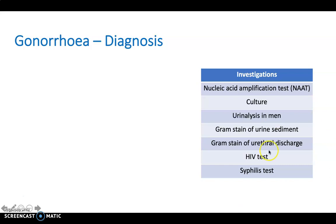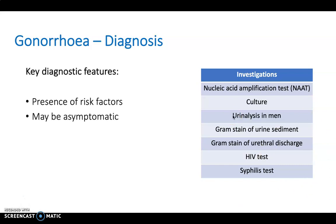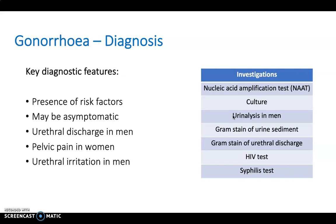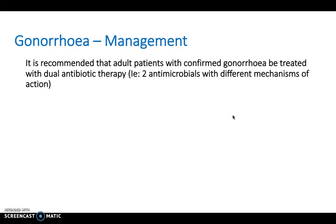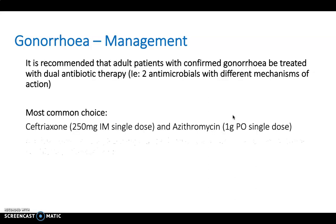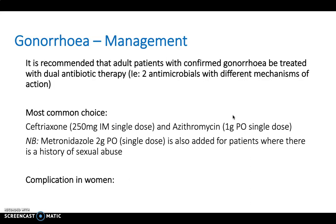To diagnose gonorrhea, the patient will have a presence of risk factors and may be asymptomatic. Symptoms can include urethral discharge in men, pelvic pain in women, urethral irritation, and dysuria. Management involves treating adult patients with confirmed gonorrhea with dual antibiotic therapy — two antimicrobials with different mechanisms of action. The most common choice is ceftriaxone and azithromycin, with metronidazole added for patients with a history of sexual abuse. The main complication in women is pelvic inflammatory disease.